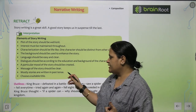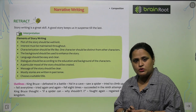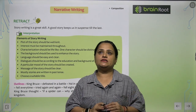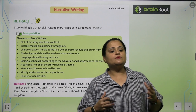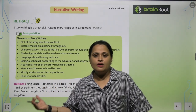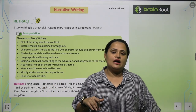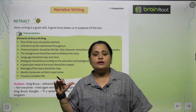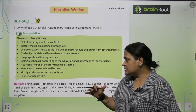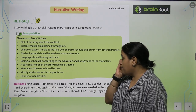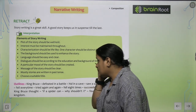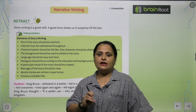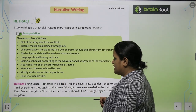Mostly, stories are written in past tense. Most stories are written largely in past tense — for example, 'Once upon a time there was a king,' or 'Once upon a time two friends Ram and Shyam were there.' So how do stories start? Past tense. You should also choose a suitable title for your story.